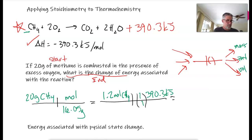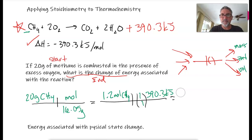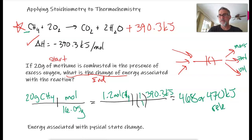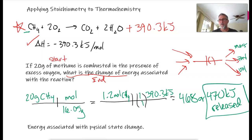So if I get 1.2 times 390.3, I get 470 kilojoules. So the energy associated is 470 kilojoules released. If it was endothermic, it would be 470 kilojoules absorbed, but since it's exothermic, it's released.